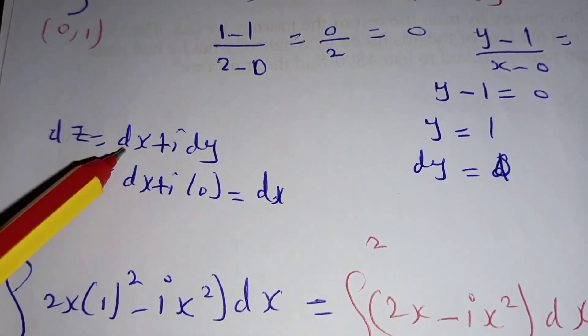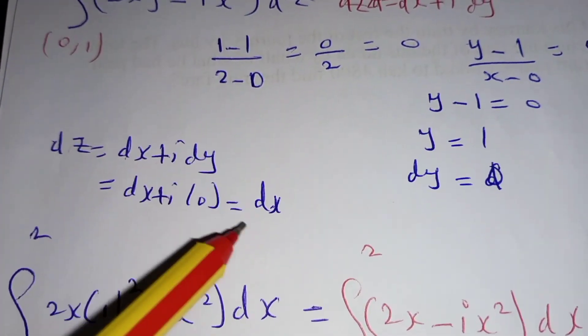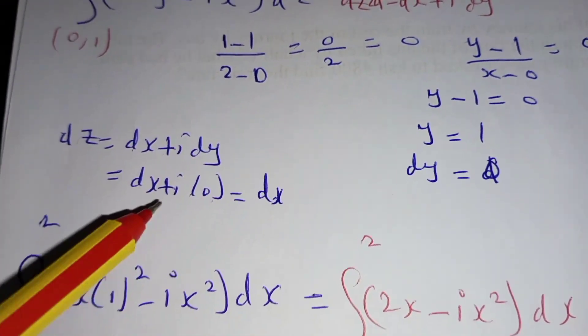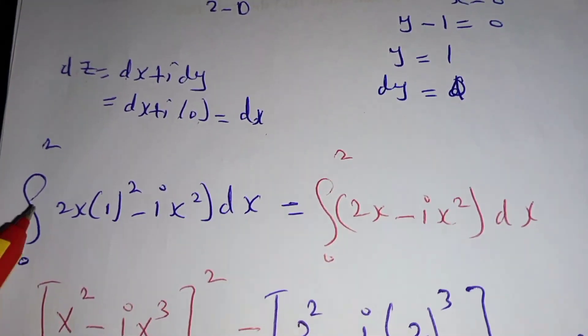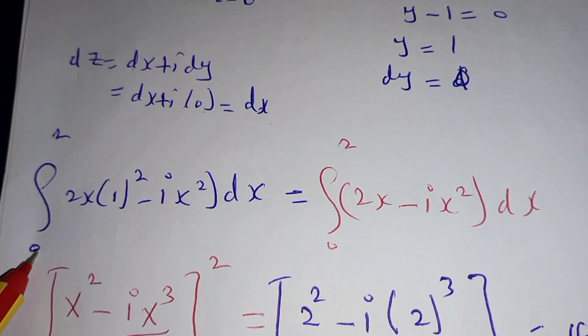Then dz = dx + idy. We substitute in dy which is 0, meaning that dz is the same as dx.